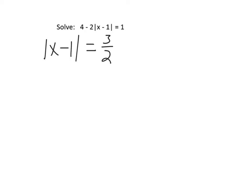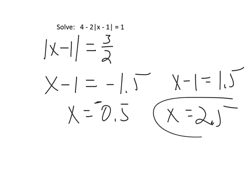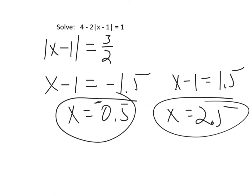Now I'll write my two equations: x - 1 = -1.5 and x - 1 = +1.5. Adding 1 to both sides, x = -0.5 and x = 2.5. Those are the two places where it works.